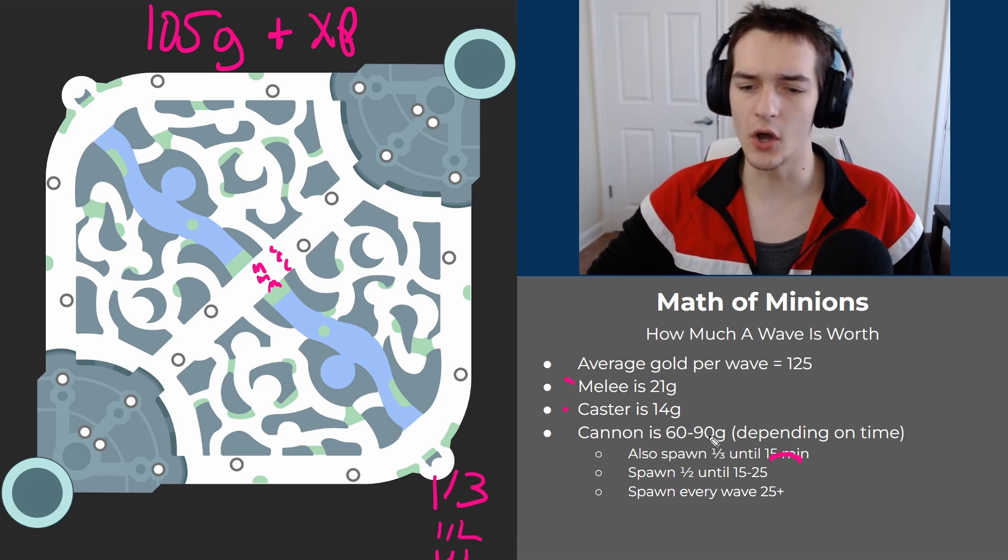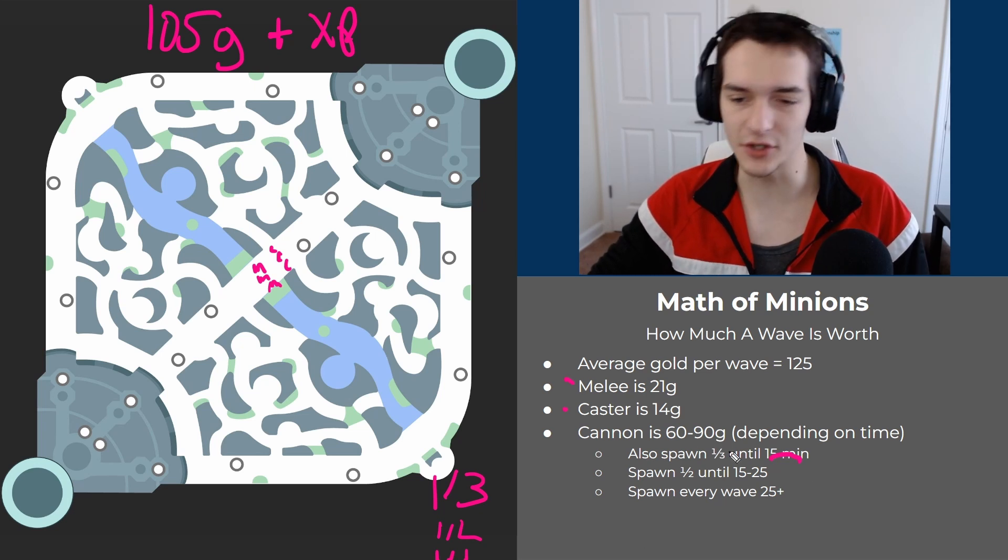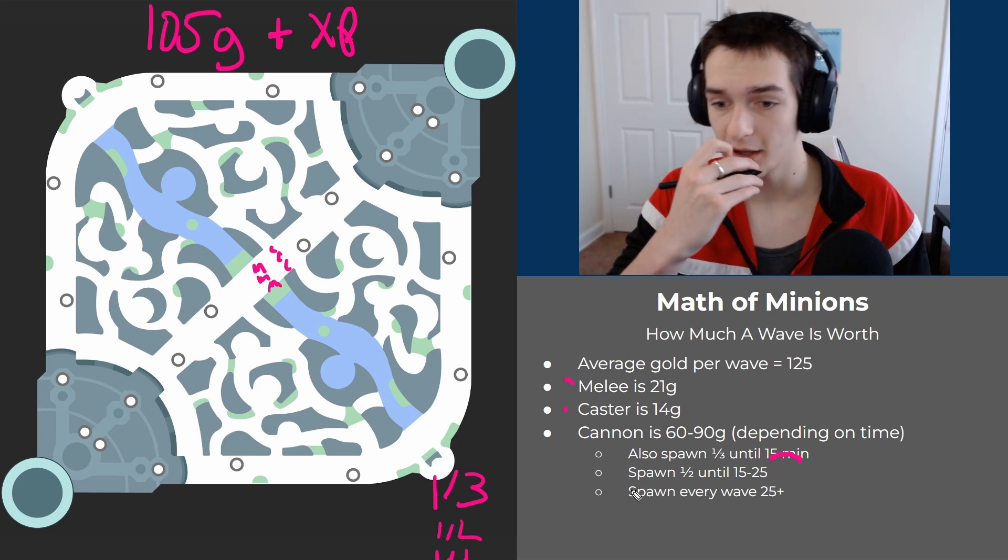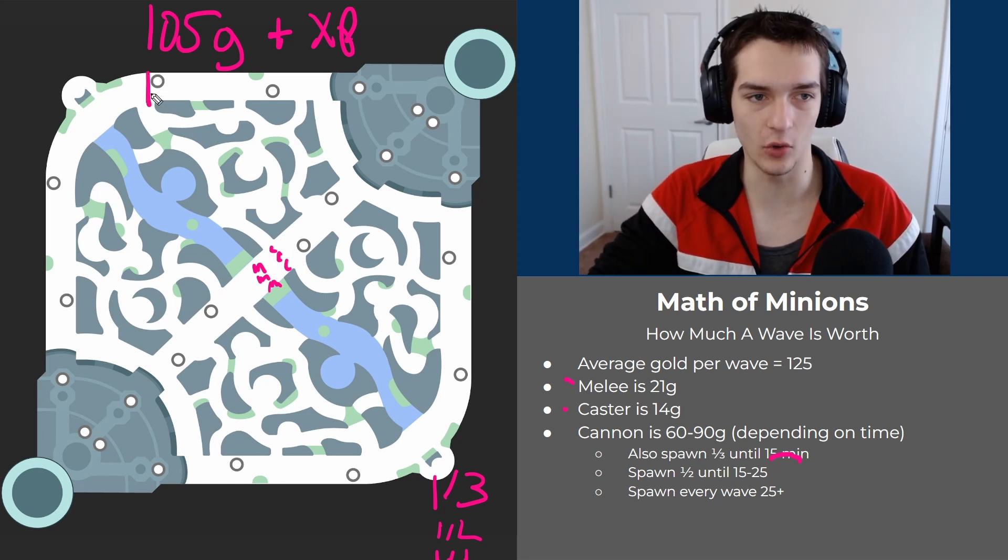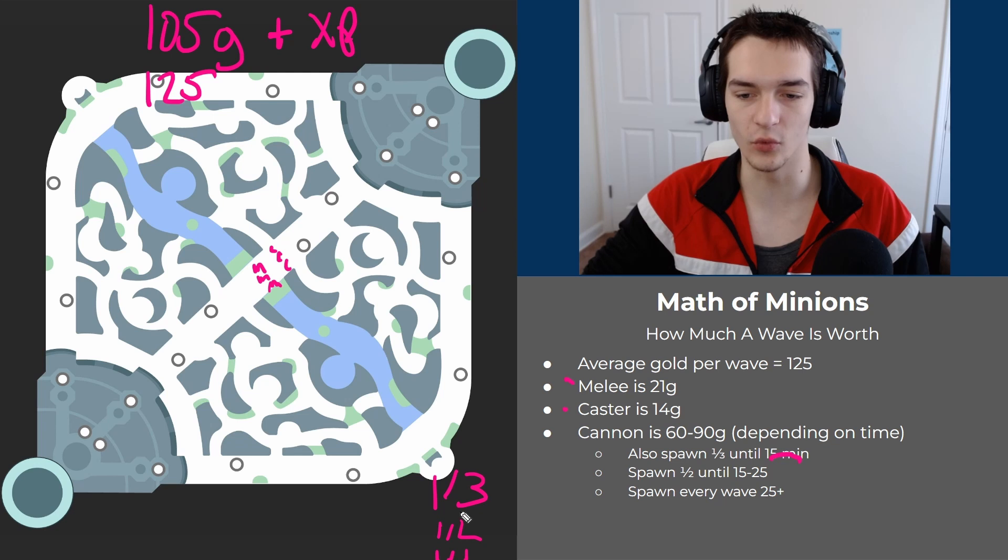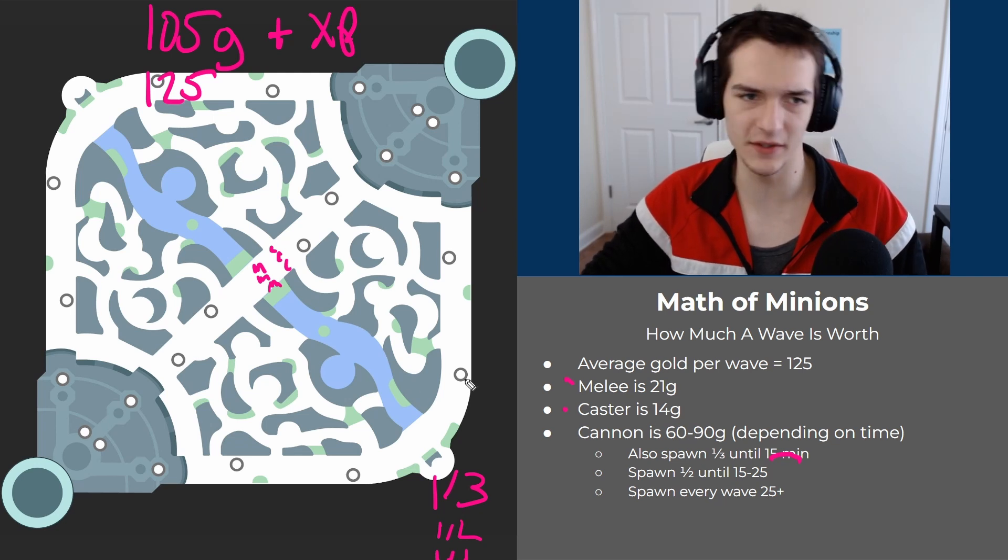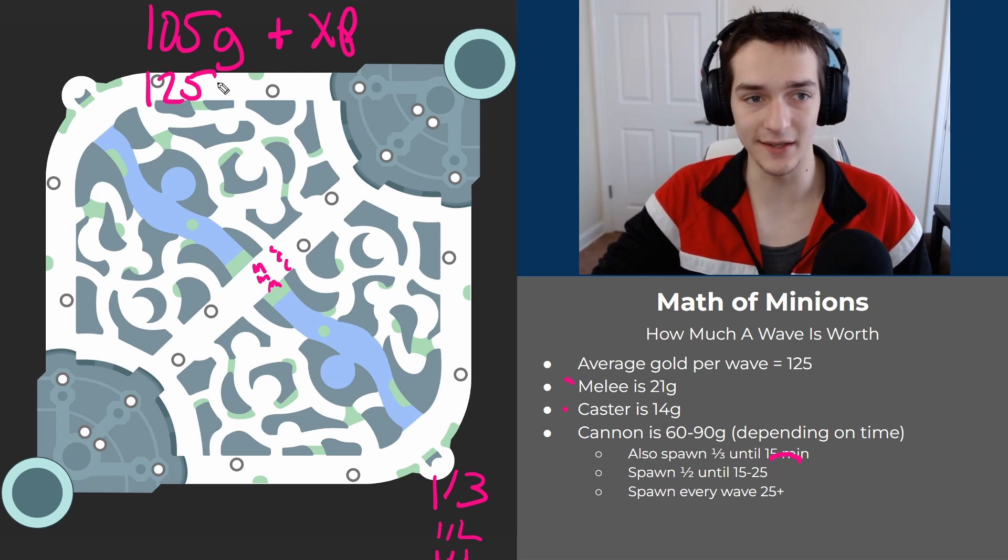It's easier just to think about these as averages at different points in the game. For the first 15 minutes, the average gold per wave is about 125 gold when you factor in that every third wave has a cannon worth roughly 60 gold plus a very significant amount of XP.